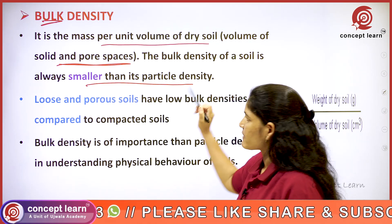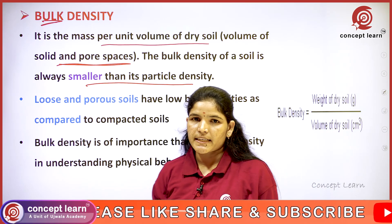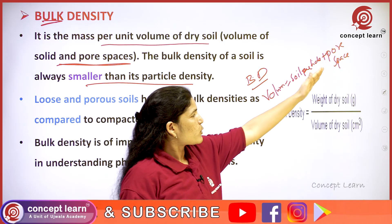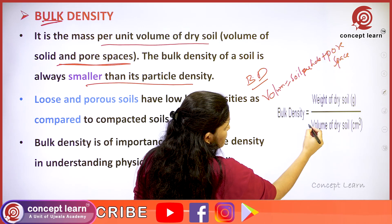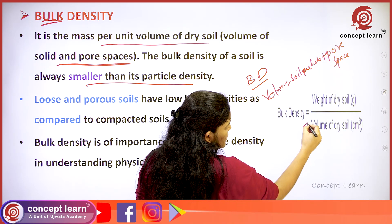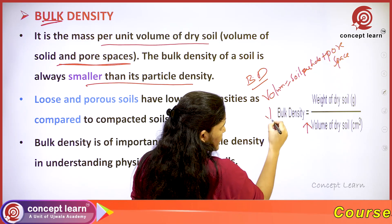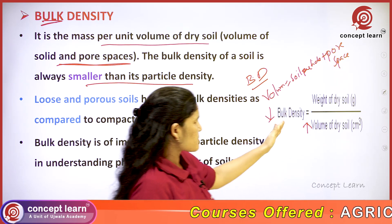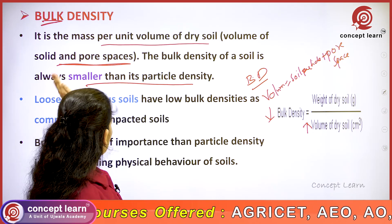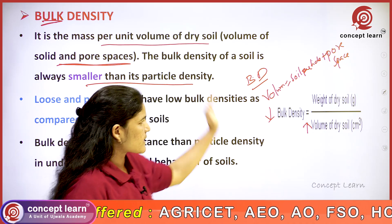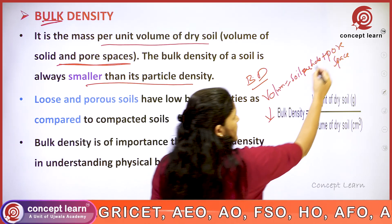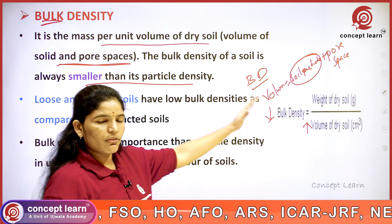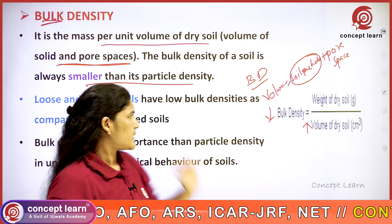The bulk density of a soil is smaller than particle density. Why? Because in bulk density we are taking both the soil particles and pore spaces, meaning the volume increases, so the bulk density decreases. Whereas in particle density, we are only taking the volume of the soil particles. That is why bulk density is always smaller than particle density.